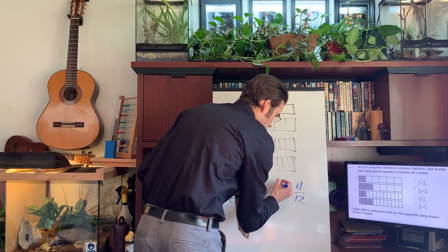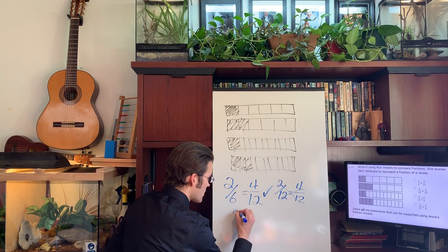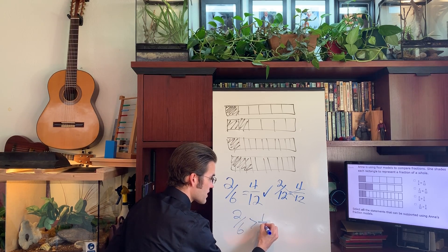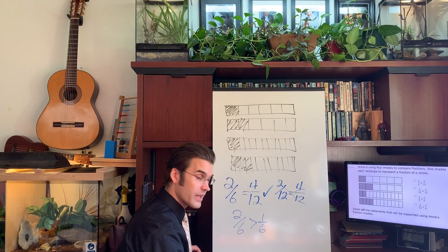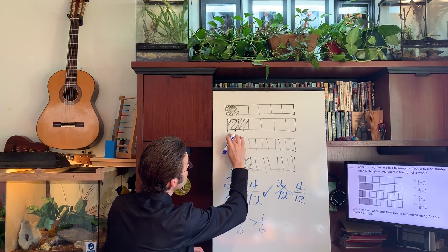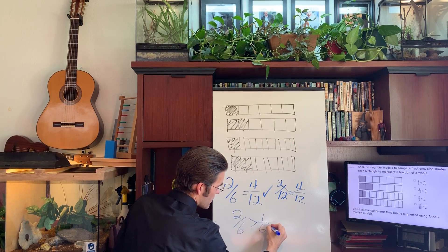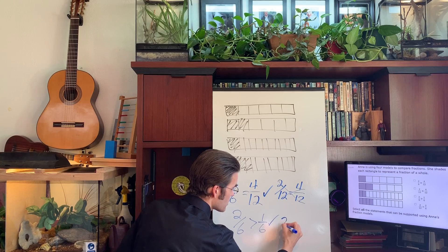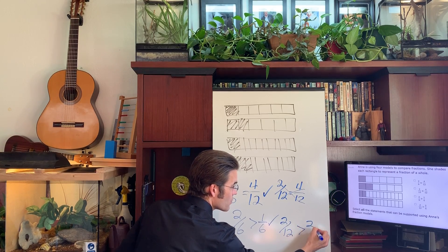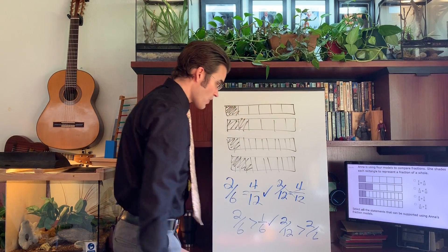Next one: two sixths is greater than one sixth. Is that true? It is, right? Two sixths is greater than one sixth. Does the model support it? Two sixths is greater than one sixth. Okay good.